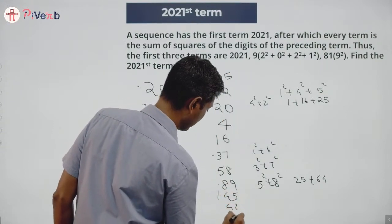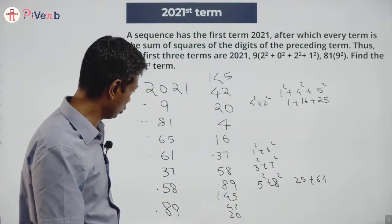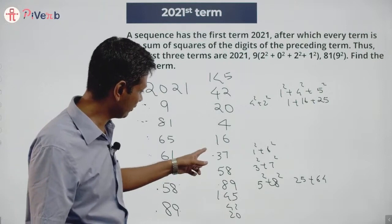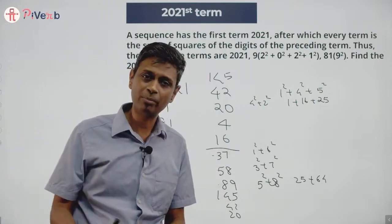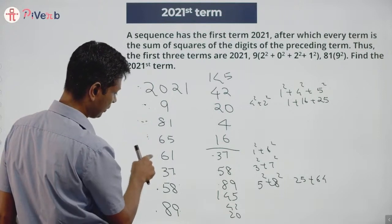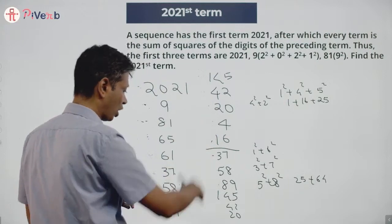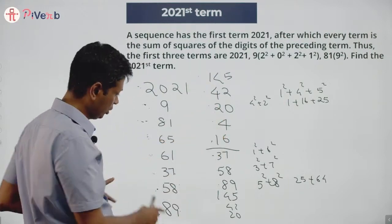Then 42, then 20, and so on. I'm done. I found a beautiful pattern. I know that the moment I have a 37, everything repeats in the same pattern after that. So I have 2021, 9, 81, 65, 61, 37, 58, 89, 145, 42, 20, 4, 16. This is a block and then I'll have this repeating.